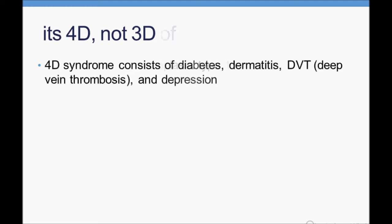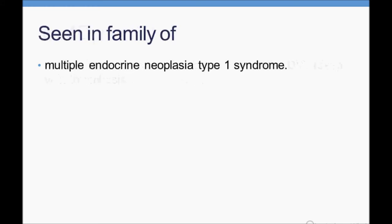Also remember: MEN Type 1 syndrome is seen in the family history of glucagonoma patients. The exact cause is not known, but glucagonoma has been seen more often in patients with a family history of MEN Type 1 syndrome.